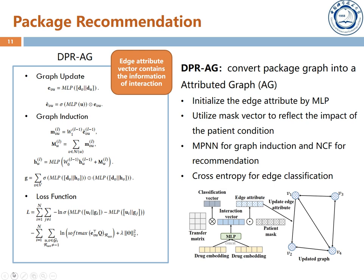In the second variant, DPRAG, we convert the package graph into an attributed graph. We first form the edge attribute vector as the interaction vector between two drugs, which is calculated by an MLP model. Then we utilize the mask layer again to update the edge attributes by adding the impact of patient condition on the interaction vector. After that, we form the message passing neural network layer for the attributed graph. We get the graph embedding by self-attention. We design a hybrid loss function that combines the BPR loss for the NCF framework and the cross-entropy loss for edge type classification. The cross-entropy loss forces the edge attribute to contain the interaction type information.